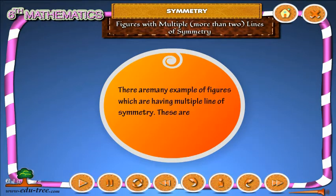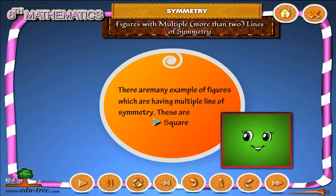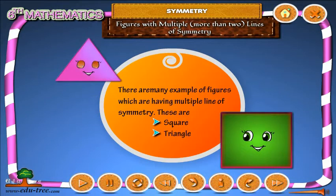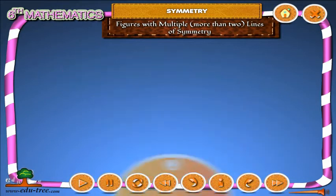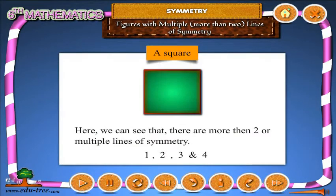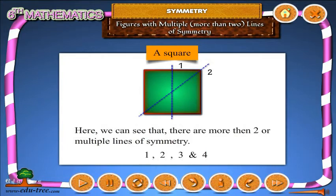These are: Square. Here, we can see that there are more than two or multiple lines of symmetry — one, two, three, and four.